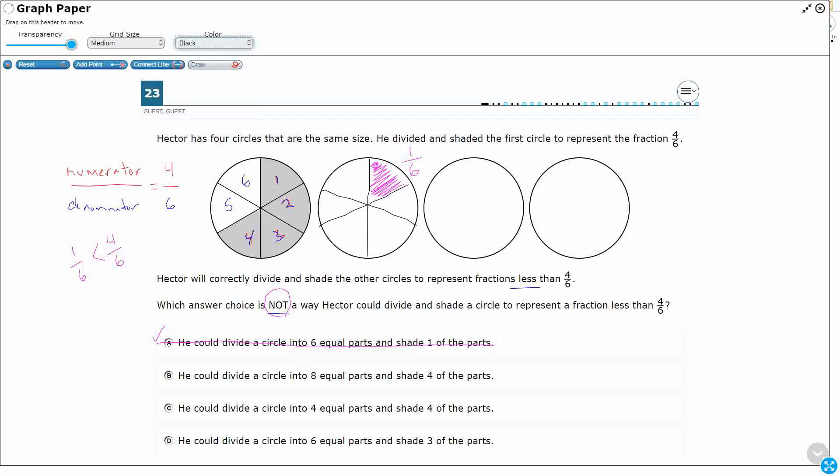He could divide a circle into eight equal parts. Eight is a little bit easier. You can draw it in fourths, and then you cut each fourth in half. Alright, so there's my eighths.